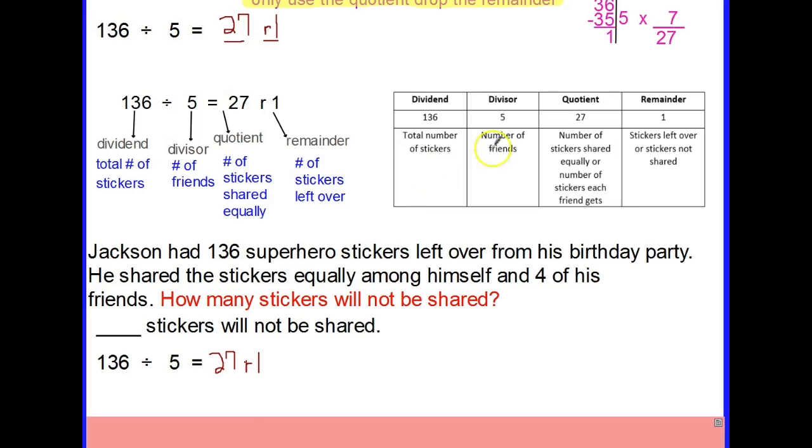Now we can answer the question by looking back at our charts or diagram. How many stickers will not be shared? One is the remainder. This is stickers left over or the stickers not shared. So one sticker will not be shared. What we did in this part is that we use the remainder only. We didn't use the quotient, we used the remainder in our answer.